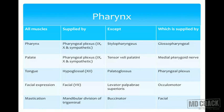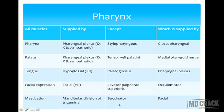All muscles of the tongue are supplied by the hypoglossal nerve (12th cranial nerve), except palatoglossus, which is supplied by the pharyngeal plexus. All muscles of facial expression are supplied by the facial nerve (7th cranial nerve), except levator palpebrae superioris, which is supplied by the oculomotor nerve. All muscles of mastication are supplied by the mandibular division of trigeminal nerve, except buccinator, which is supplied by the facial nerve.